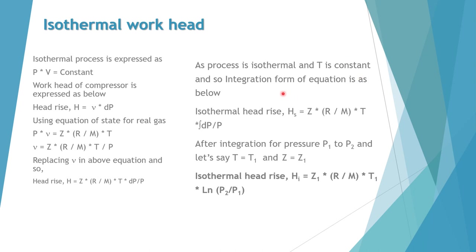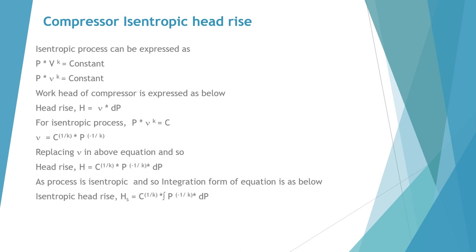After integration, changing the integration limits from p1 to p2, since t1 and t2 remain constant in the isothermal process, t is equal to t1, and z is equal to z1. So the isothermal head rise can be written as: Hi equals z1 into r by m into t1 into log of p2 by p1. This is the standard formula for isothermal work head rise.